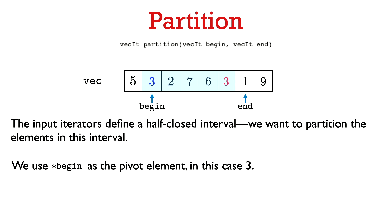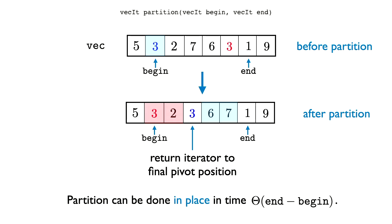Let's look at an example. Say begin points to the first three and end points to one — we want to partition the interval shaded in blue, using three as the pivot. After calling the partition function, the pivot is placed such that everything from begin up to and including the pivot is at most the pivot's value, and everything from pivot-plus-one up to but not including end is at least the pivot's value.